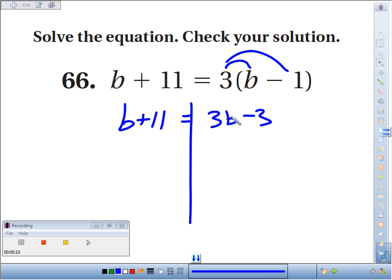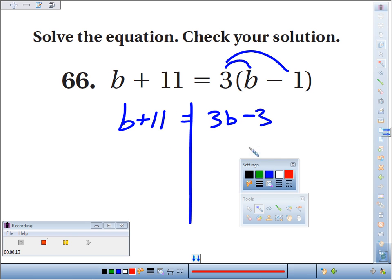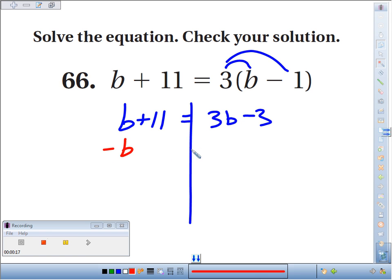Since we've got variables on both sides, let's eliminate them from the side that has less. 3 versus 1, let's get rid of the 1. If I subtract b from one side, I have to do it to the other to balance things. They cancel. I get 11 equals 3b minus b, which is 2b's, still have the minus 3. Peel away the layers.